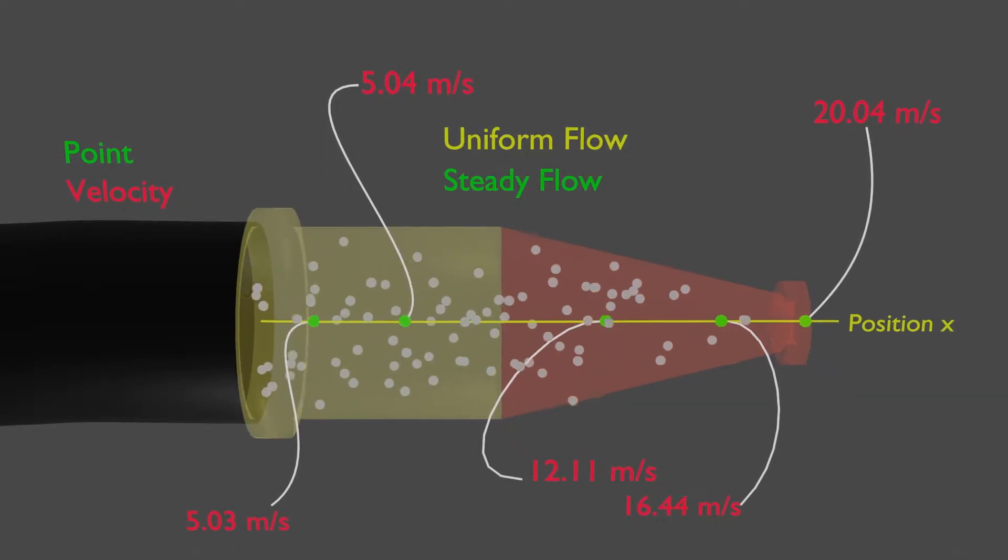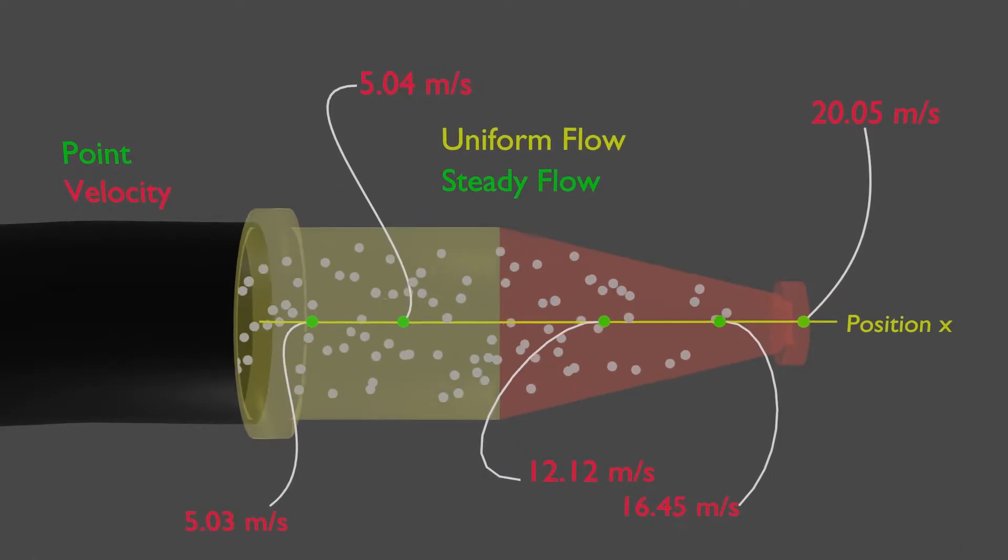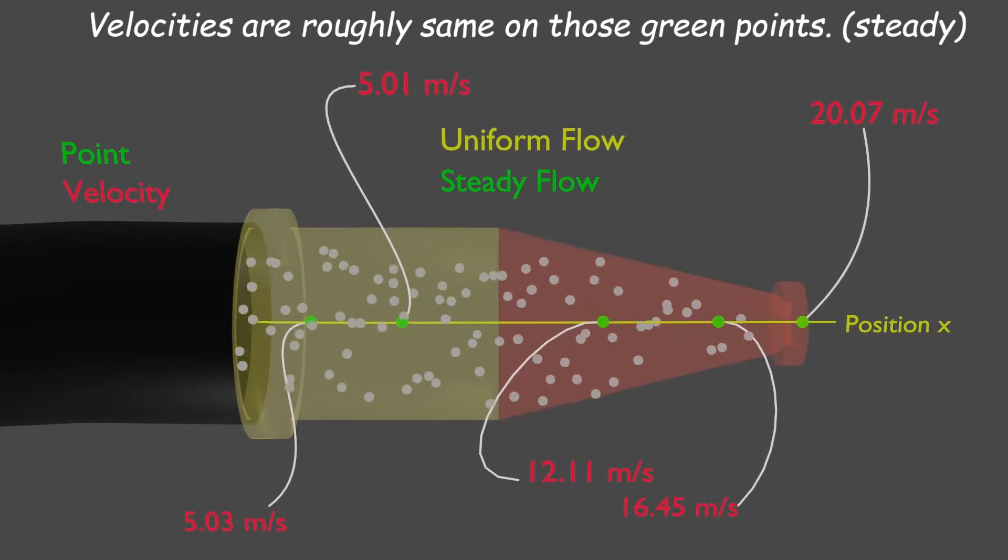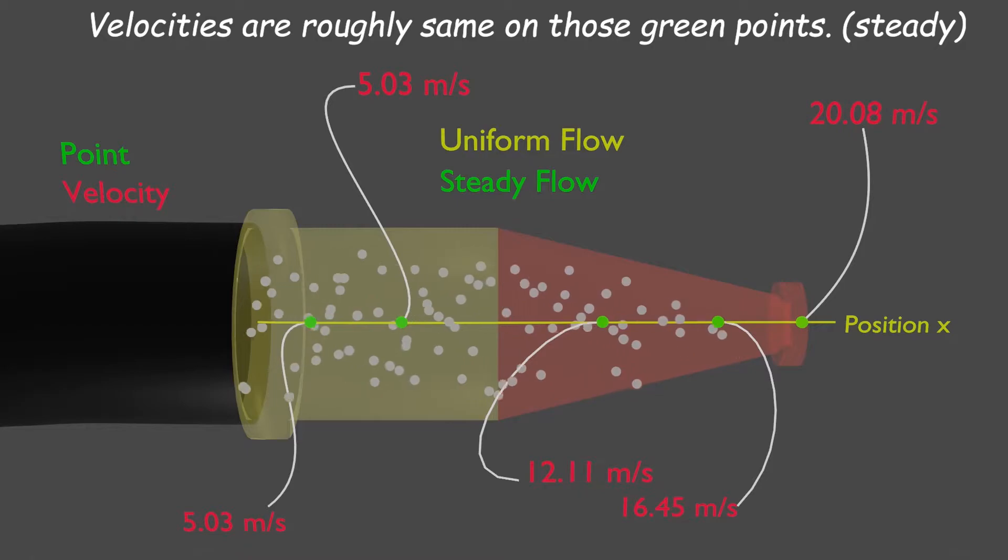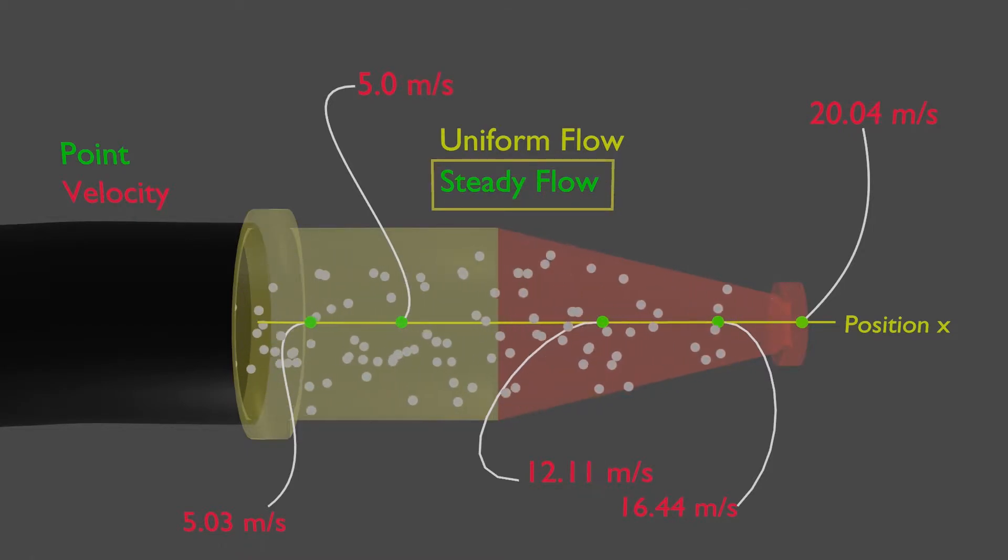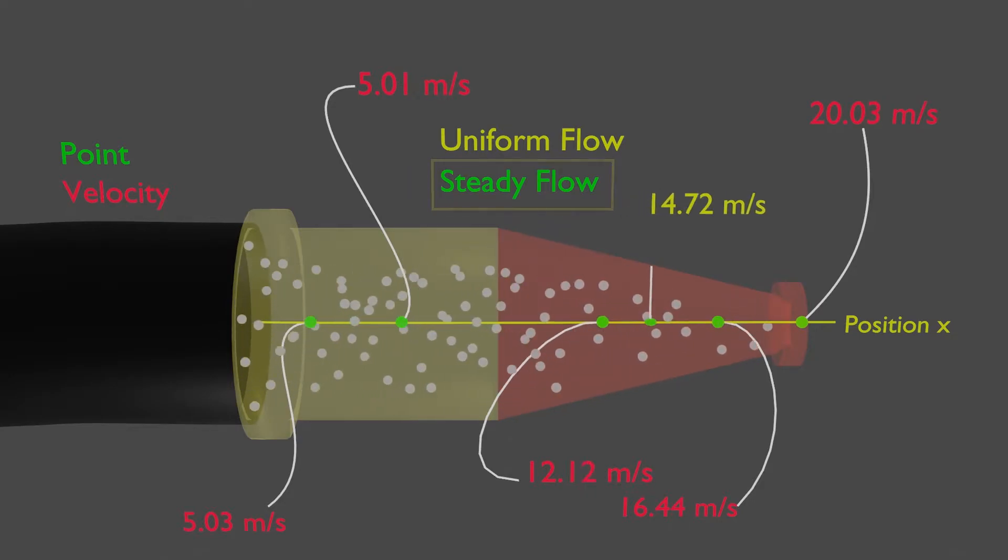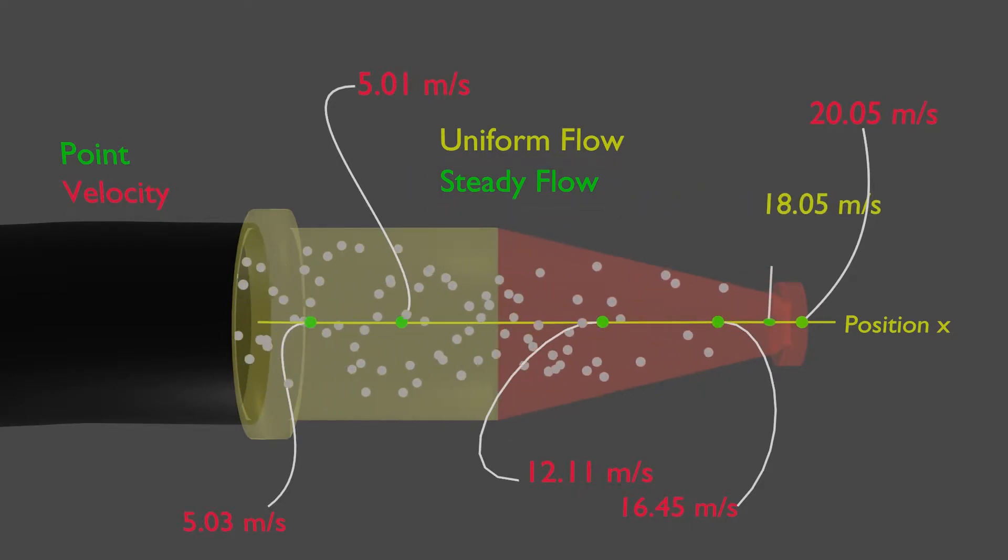Look at the converging section of the nozzle. Velocities are not changing on those fixed points. They stay the same quantitative value, which makes it steady flow. But it is changing from one position to next so it is not a uniform flow.